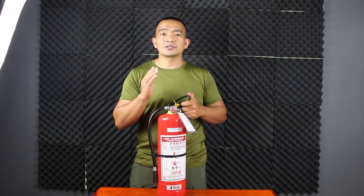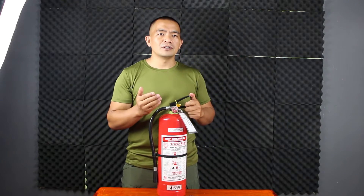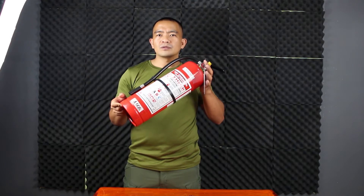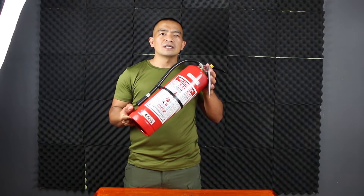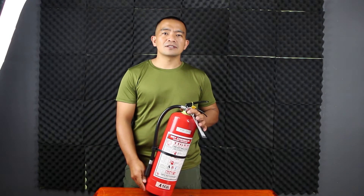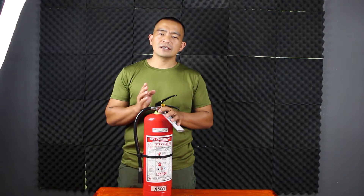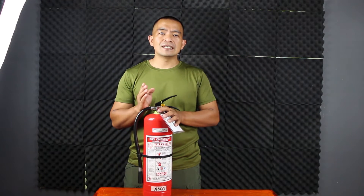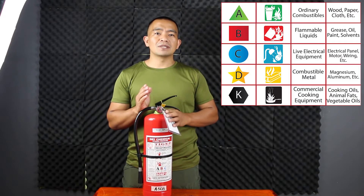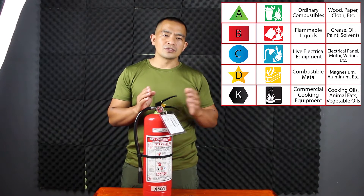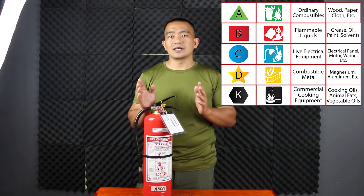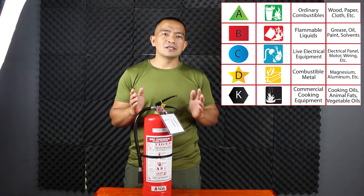Before going into how to use it, we need to discuss the classes of fire first, because fire extinguishers have limitations. It is very important that we know what appropriate material to use to suppress the fire. Under the classes, we have Class A, Class B, Class C, Class D, and Class K. Class A refers to ordinary combustible materials — for example, paper, wood, and cloth.